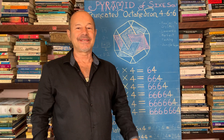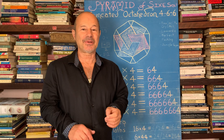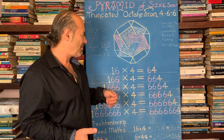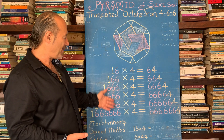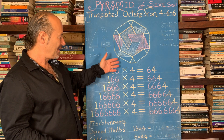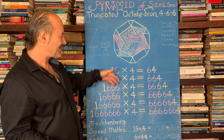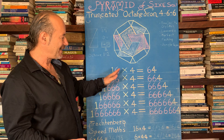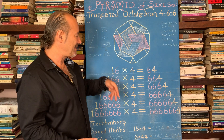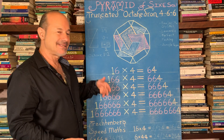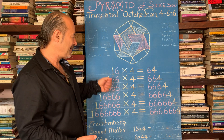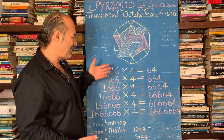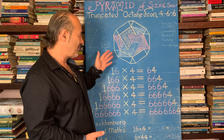Hi everybody. Today I'd like to explore the fascination with what we call number pyramids — these numbers that all ring a bell, resonating and repeating, with this arcane kind of symmetry and fascination with them.